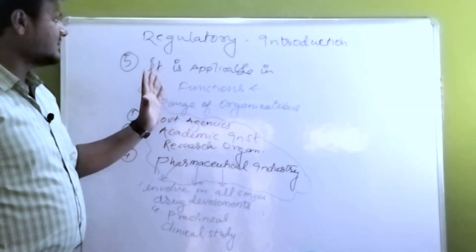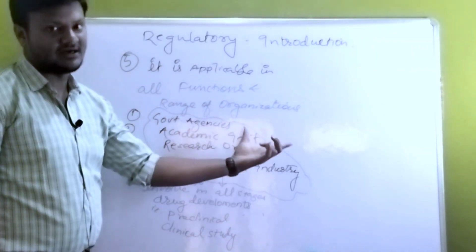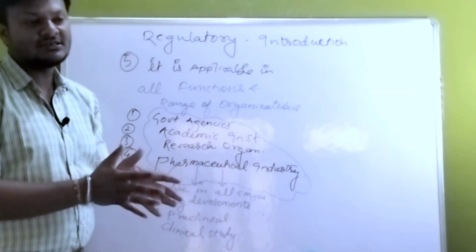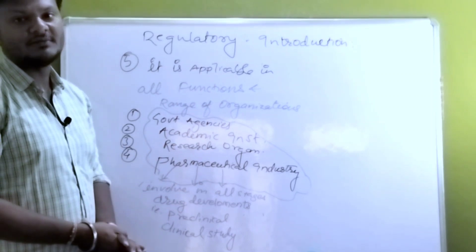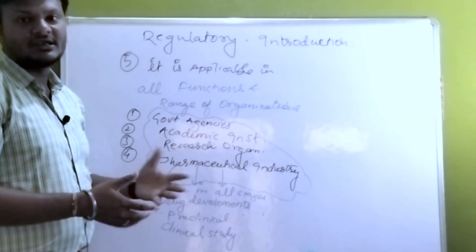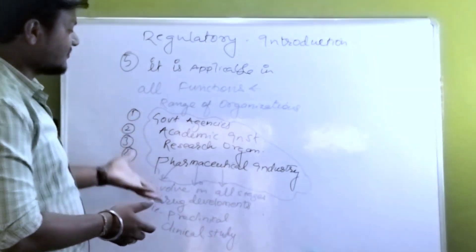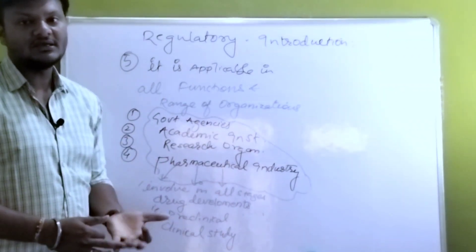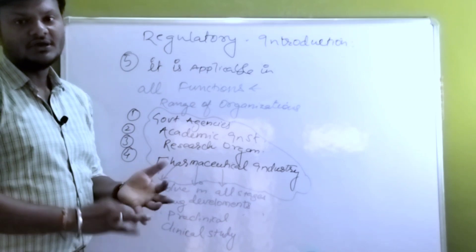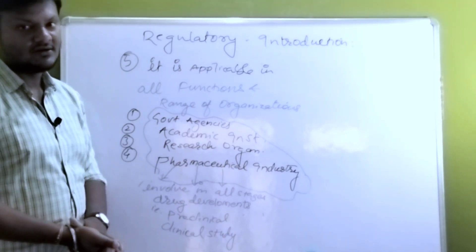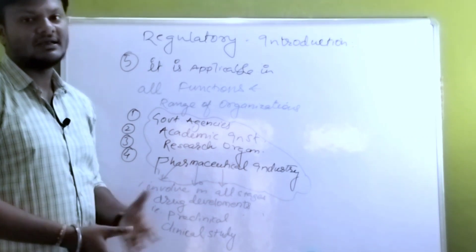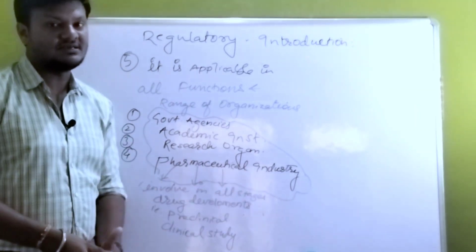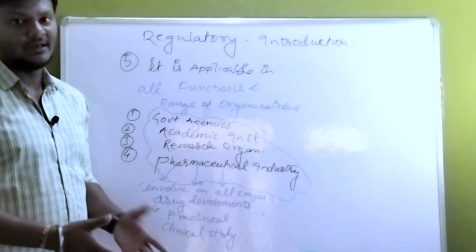Point number five: Regulatory is applicable in all functions and a range of organizations. It functions impactfully across multiple organizations — maximum government agencies work as per regulatory. In academic institutions, whether PCI or AICTE, all those agencies are part of a regulatory framework. Research organizations follow regulatory affairs and regulatory guidance. And most importantly, pharmaceutical industries.